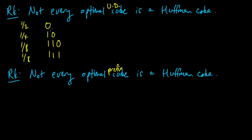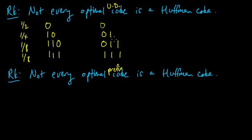In fact, it's a Huffman code, but we can easily transform it into a suffix code which is not a prefix code but has the same lengths. If we just reverse these codewords, we get 0, 01, 011, 111. This is no longer a prefix code, but it is a suffix code — no codeword is a suffix of another — and therefore it's still uniquely decodable with the same lengths.